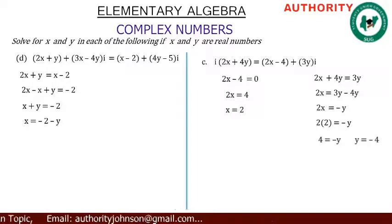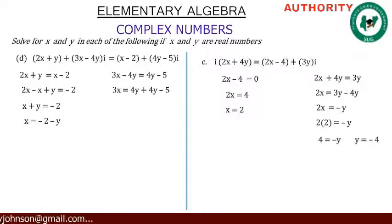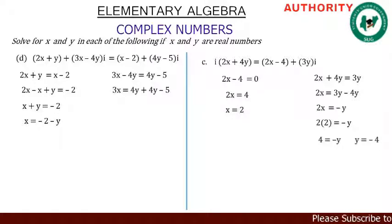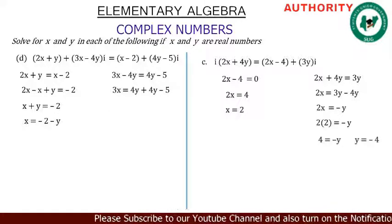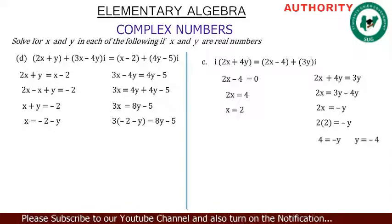Now equating the imaginary parts: 3x minus 4y equals 4y minus 5. Rearranging: 3x equals 4y plus 4y minus 5, so 3x equals 8y minus 5.